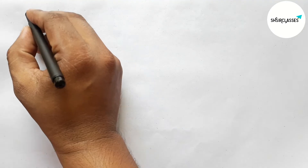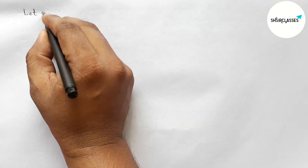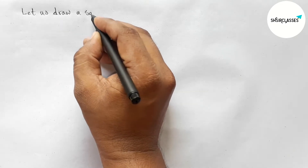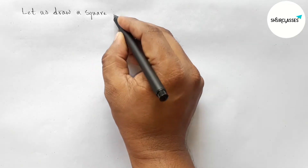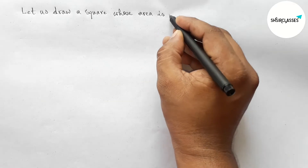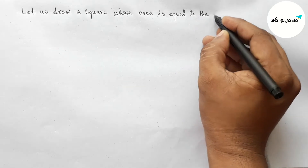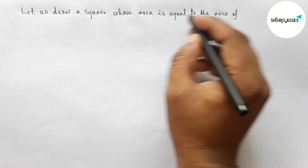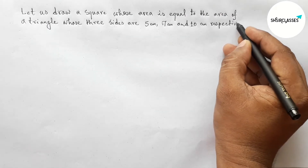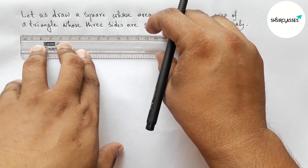Hi everyone, welcome to essay share classes. Today in this video, let us draw a square whose area is equal to the area of a triangle whose three sides are five centimeter, seven centimeter, and ten centimeter respectively, in an easy way. Please watch the video till the end. Let's start.